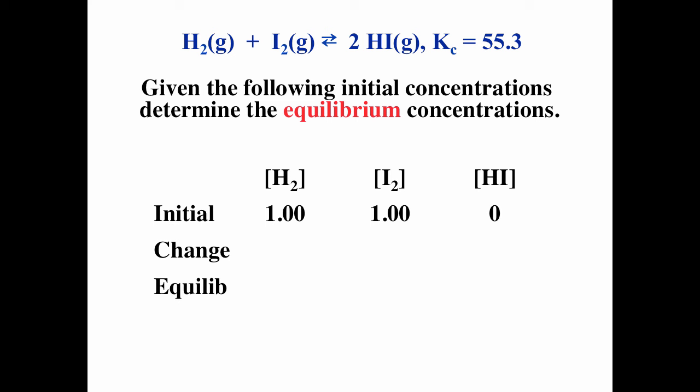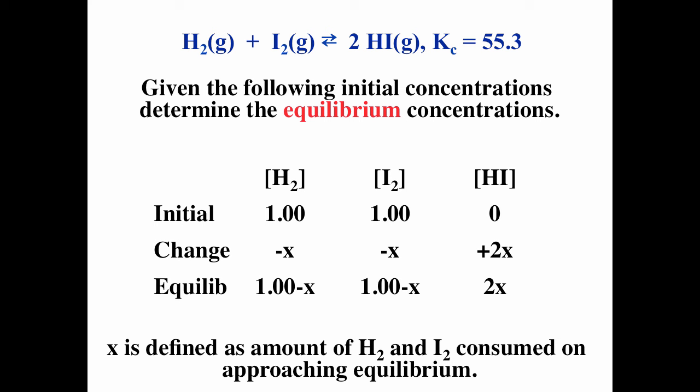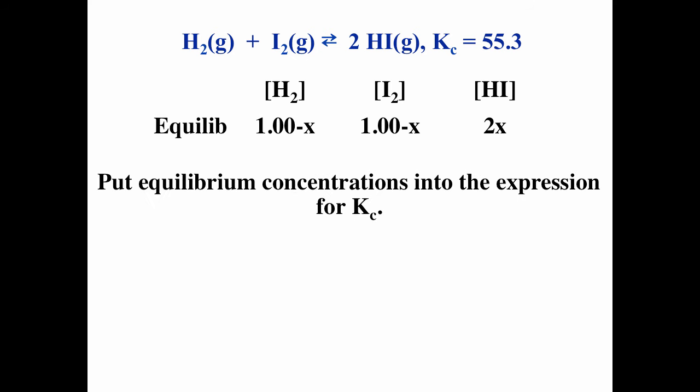Next, H₂(g) + I₂(g) → 2 HI, with Kc given as 55.3. Given initial concentrations of 1 mol/L H₂, 1 mol/L I₂, and 0 HI, we set up the ICE table. The change row has −x for H₂, −x for I₂, and +2x for HI. At equilibrium: H₂ is (1 − x), I₂ is (1 − x), and HI is 2x, where x is defined as the amount of H₂ or I₂ consumed.